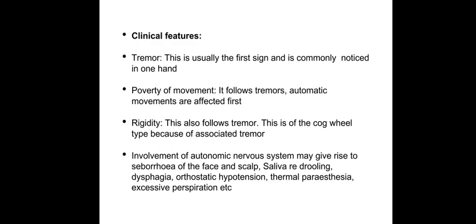Coming to the second important feature: the poverty of movement, which is called akinesia or bradykinesia. This follows tremor. Automatic movements are first affected. Thus when the patient walks, the swinging of the arm is lost. If the patient slips, he does not always make the necessary movements to preserve his balance.